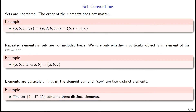Now we have some important set conventions. The first is that sets are unordered — the order of the elements does not matter. So the set {A, B, C, D, E} is the same thing as {E, D, B, C, A} or {B, E, D, A, C}. There are many different ways we could write this set — I think there are about 120 — and as long as the elements are the same, the order does not matter.